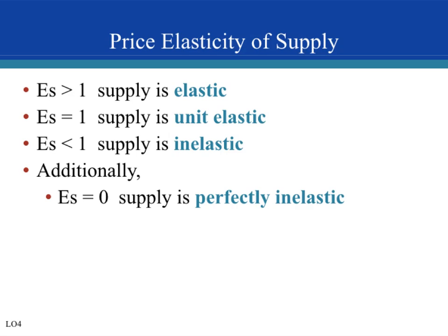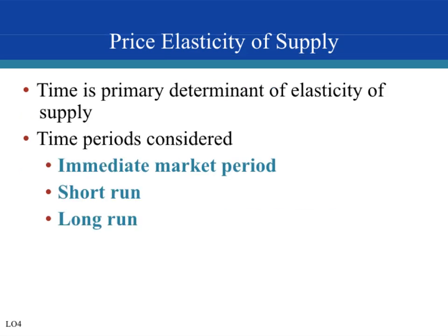If elasticity of supply is greater than 1, supply is elastic — quantity supplied changes by more than the change in price. If price went up by 2% and quantity supplied went up by 5%, supply is elastic. If supply is inelastic, quantity supplied changes by less than the percentage change in price. If price went up by 5% and quantity supplied only went up by 2%, supply is inelastic. If the percentage changes are equal, supply is unit elastic. In the case of perfectly inelastic supply, any price change causes no change in quantity supplied.